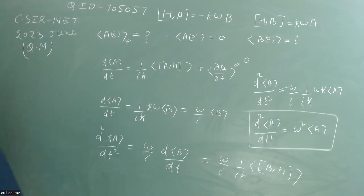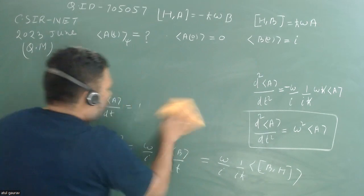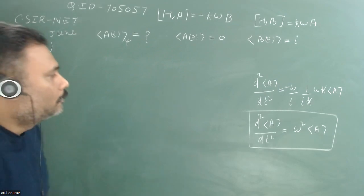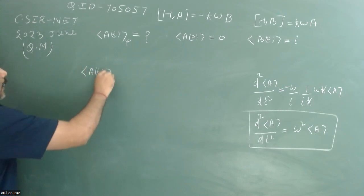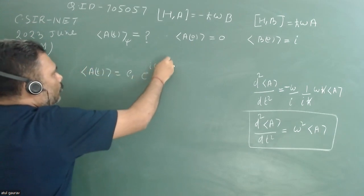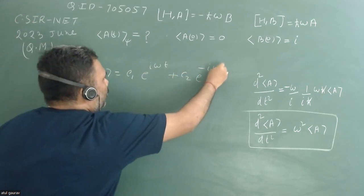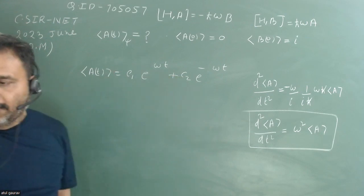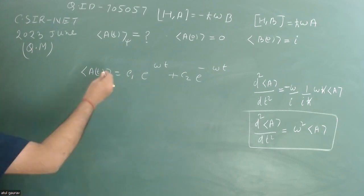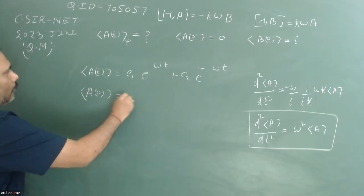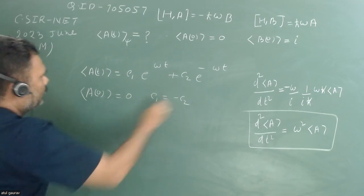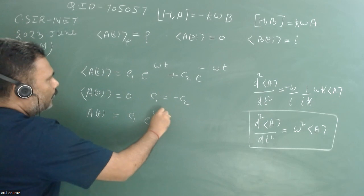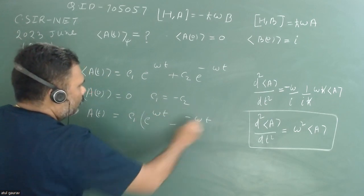Let's solve this differential equation with the two boundary conditions. The general solution is ⟨A(t)⟩ = C₁e^(ωt) + C₂e^(−ωt). At T=0, ⟨A(0)⟩ = 0, which gives C₁ = −C₂. So ⟨A(t)⟩ = C₁(e^(ωt) − e^(−ωt)).